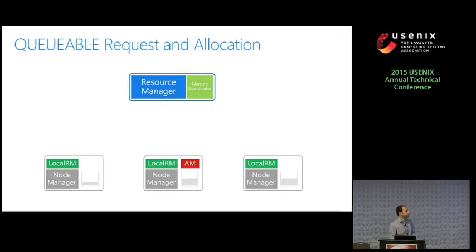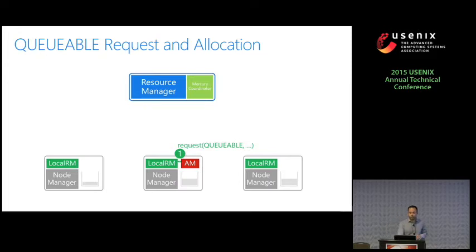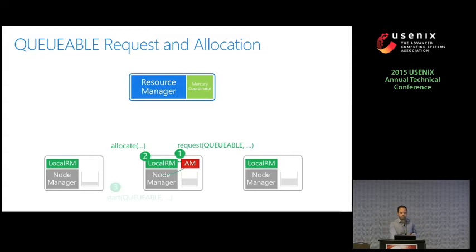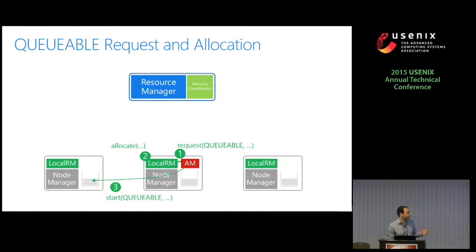For the request and allocation of queueable containers: the application master submits a request for a queueable container to the local RM. The local RM sees that it's a queueable container, so it bypasses the central RM completely. It does the allocation locally, and the application master can then queue the request to one of the node managers. It adds the task to the queue, and we periodically check the queue; when resources are available, we execute these queueable containers.